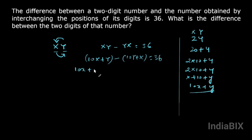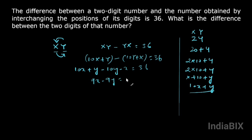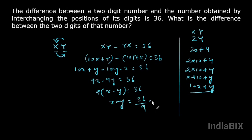So 10x plus y minus 10y minus x equals 36. This simplifies to 9x minus 9y equals 36. Taking 9 as common, x minus y equals 36 divided by 9, which is 4. So the difference between the digits of the number, x minus y, is equal to 4. This is the answer.